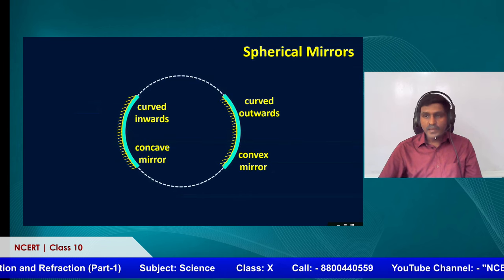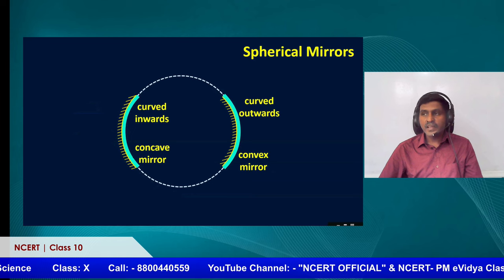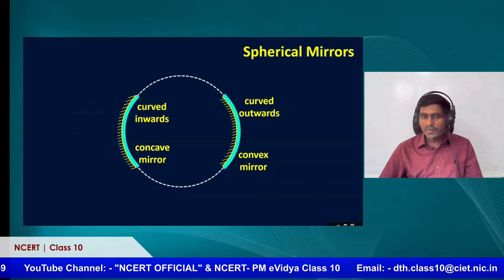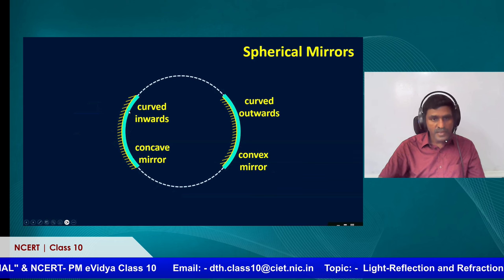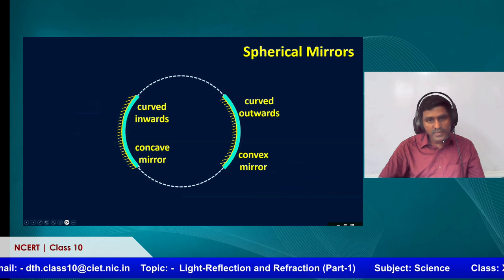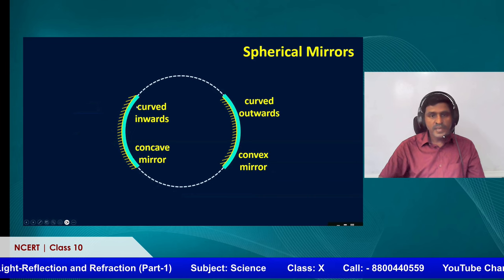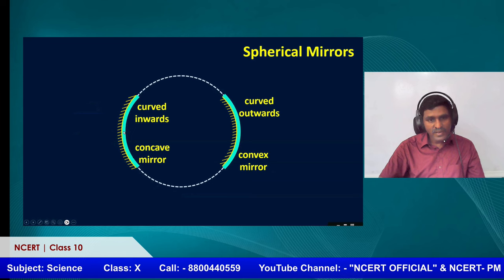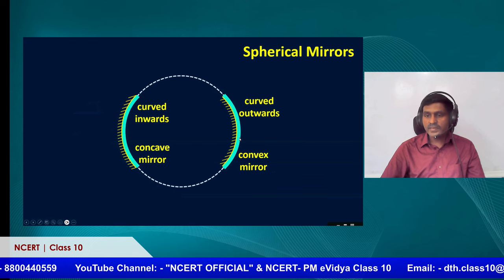Now we look at spherical mirrors. In the plane mirror topic, you dealt with this in lower classes, and now you are moving to spherical mirrors. These mirrors are called spherical because they have a curved surface. The light can reflect on the curved surface — where the reflecting surface is curved inwards, it is called a concave mirror; it looks like a cave. Where the reflecting surface is curved outwards, it is called a convex mirror.